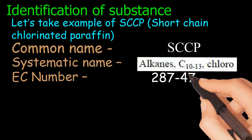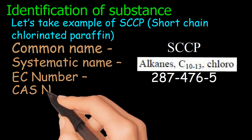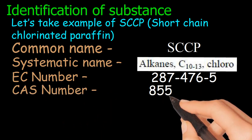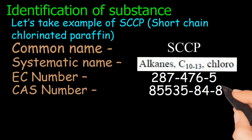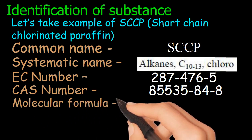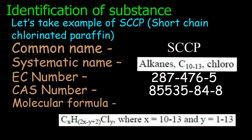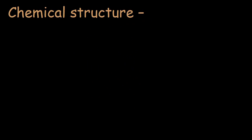287-476-5. CAS number: 85535-84-8. Molecular formula: CXH(2X-Y+2)CLY, where X equals 10 to 13 and Y equals 1 to 13. Chemical structure.